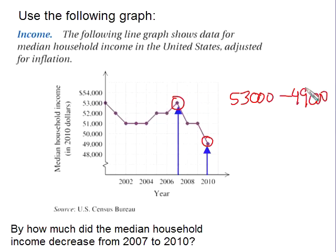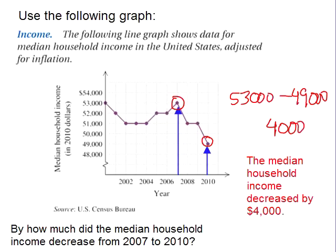So if you subtract these values, we'll get $4,000. Therefore, the median household income decreased by $4,000.